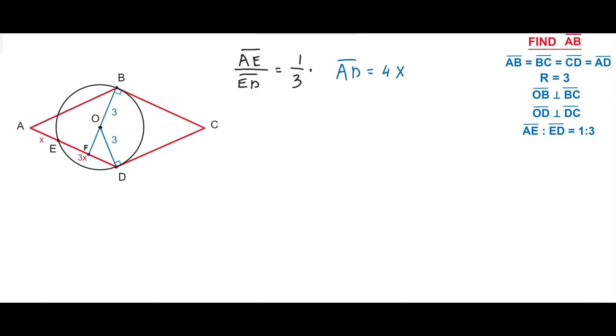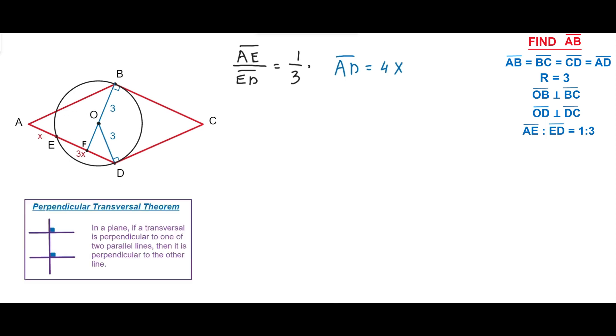Because segments BC and AD are parallel and BF is perpendicular to the segment BC, we can conclude that BF is also perpendicular to the segment AD according to the perpendicular transversal theorem. So now we know the angle BFD is a right angle.